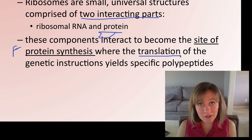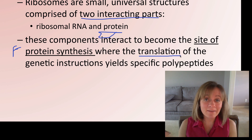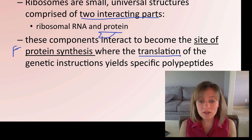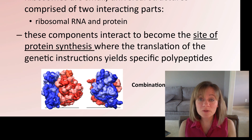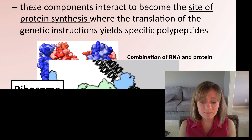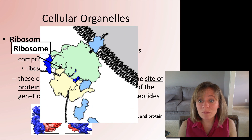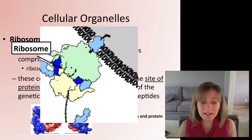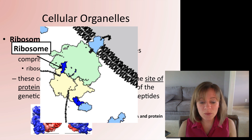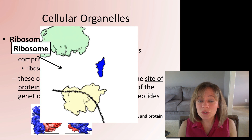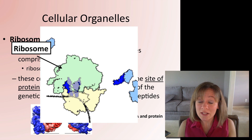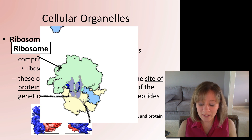This is where translation happens. The ribosome translates genetic information — the nucleotides — into specific polypeptides composed of amino acids. Here's a little animation: the ribosome is embedded in a membrane, genetic information comes in as nucleotides, the ribosome reads it, brings in amino acids, and creates the polypeptide chain.